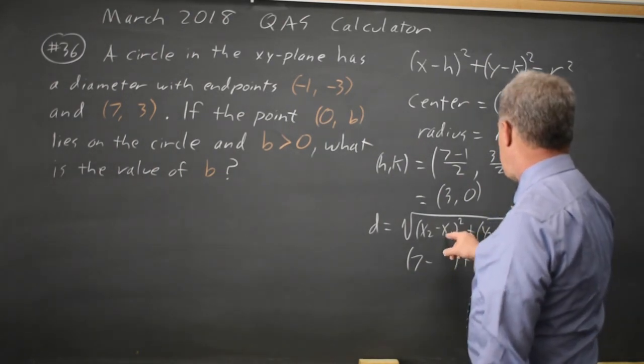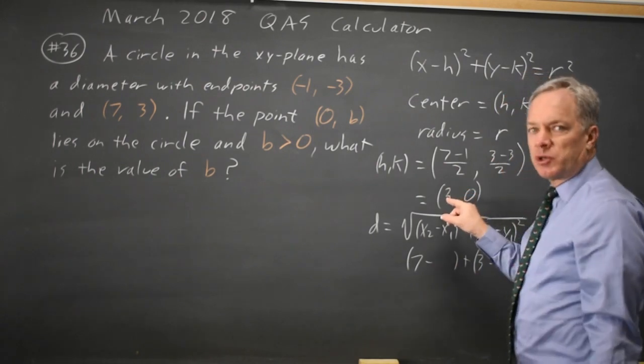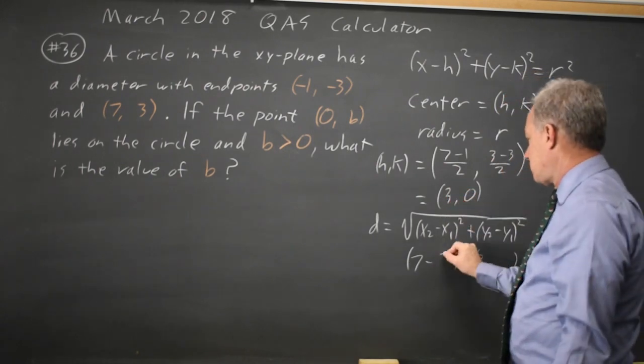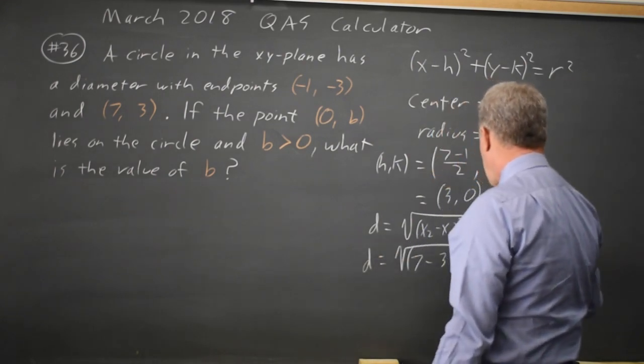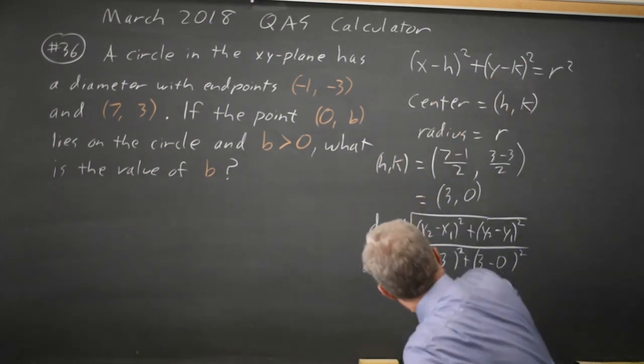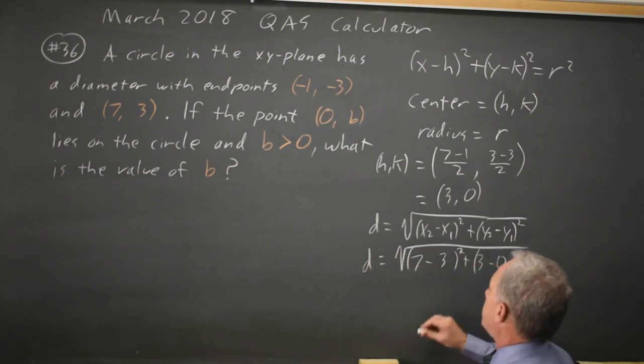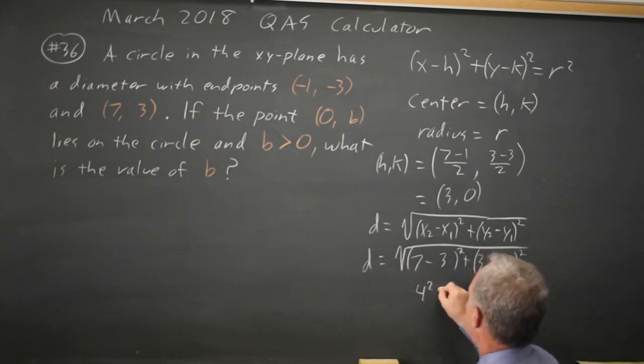And x1, y1 will be the point at the center, 3, 0. And those differences are squared. 7 minus 3 squared is 4 squared. 3 minus 0 squared is 3 squared.